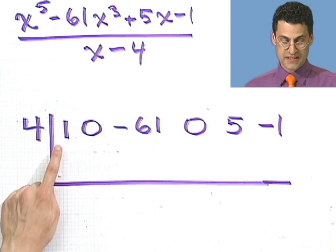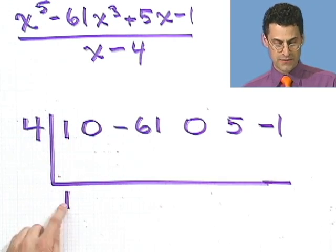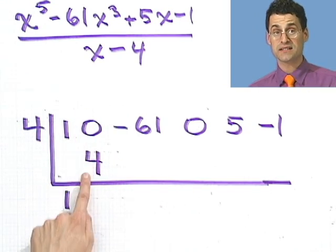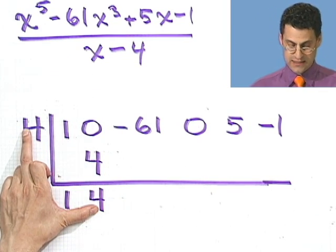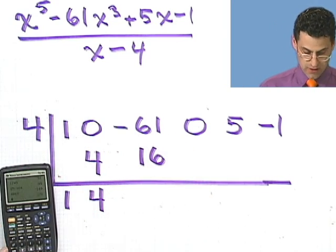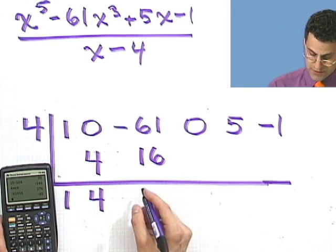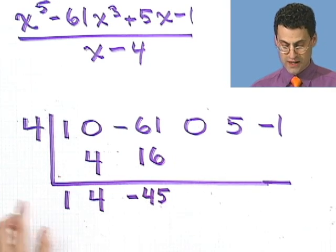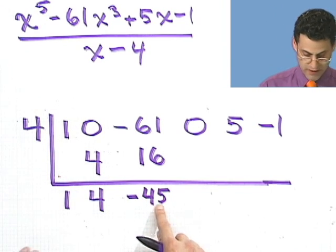Now let's see what happens. The first step is to bring that 1 straight down. Then I take 4 times 1 and write that answer here — that's 4. Then I add: 0 plus 4 gives 4. I multiply 4 by 4 and get 16. Then I add minus 61 and 16 to get minus 45.